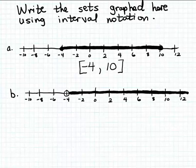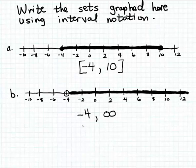So how would we write this set in interval notation? The smaller boundary value on the left is minus 4. Since we don't have a boundary value on the right-hand side, this set extends all the way out to positive infinity. As a boundary value, we're going to use our notation for positive infinity, which is the sideways 8 symbol. Those are the boundary values we'll use in interval notation for writing down this set.